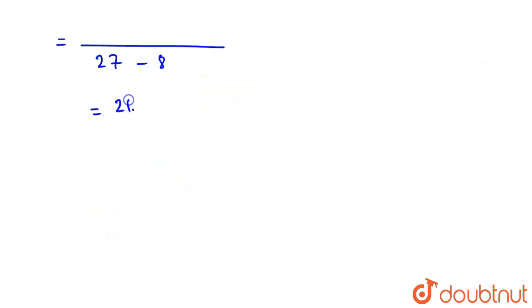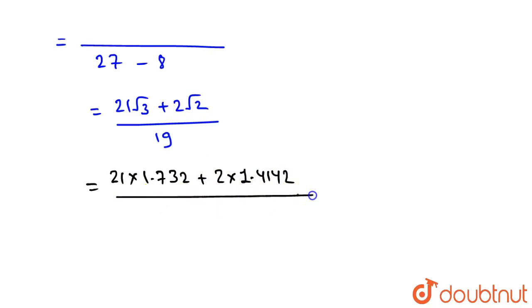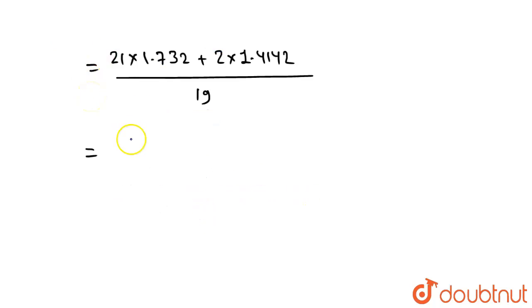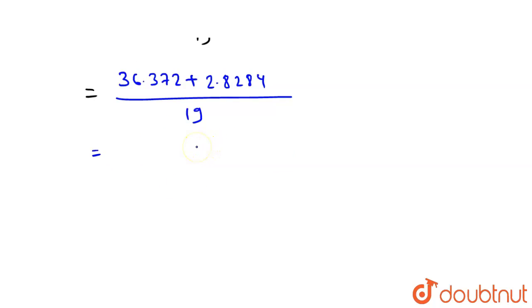In the next step we substitute the values of √2 and √3. So we get: 21×1.732 + 2×1.4142, all divided by 19. That gives 36.372 + 2.8284 = 39.2004, divided by 19. When we divide, we get 2.063.